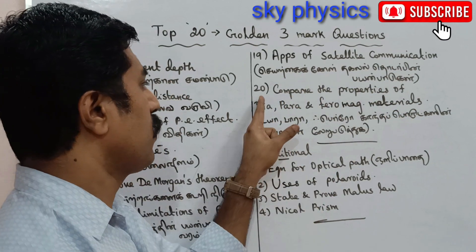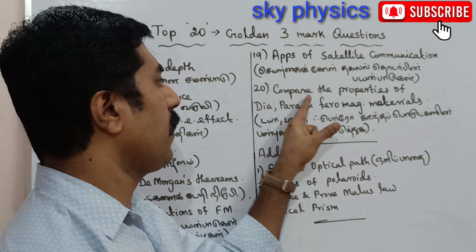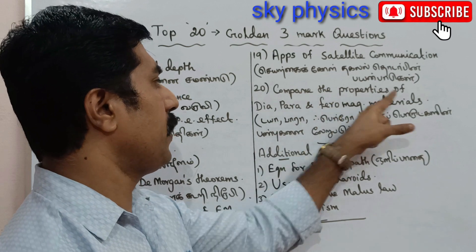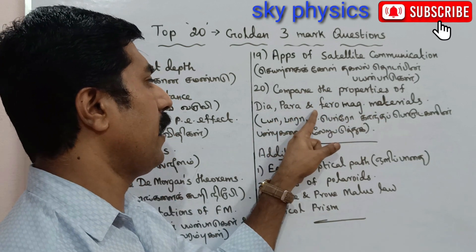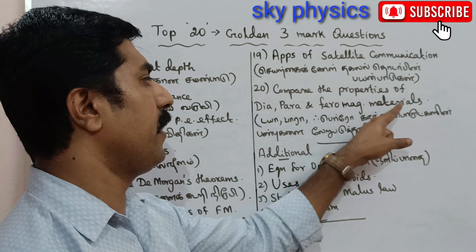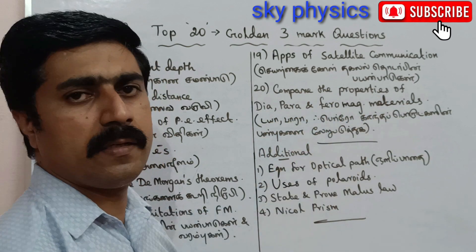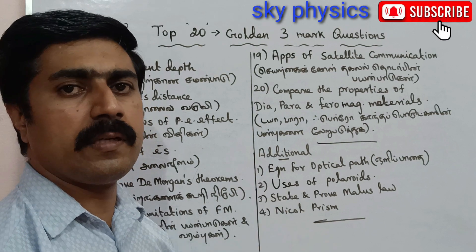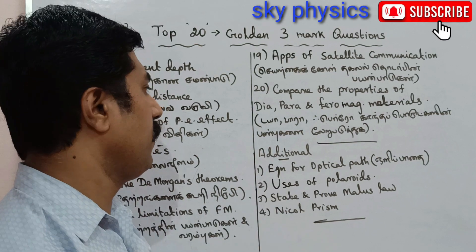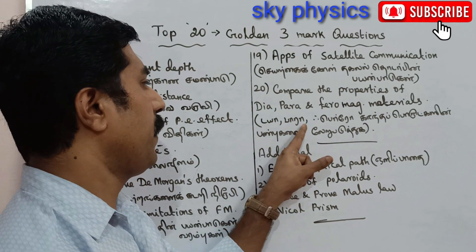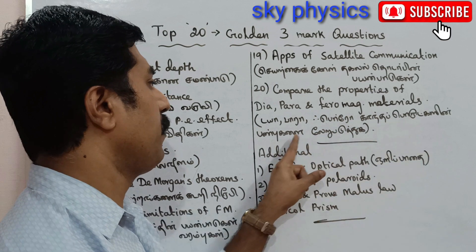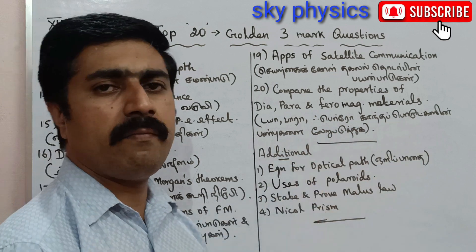Question number 20: Compare the properties of diamagnetic, paramagnetic, and ferromagnetic materials — from the third unit. (Tamil: Daya, Para, Ferro — Kandha Purul Kali Pandpukalai.)